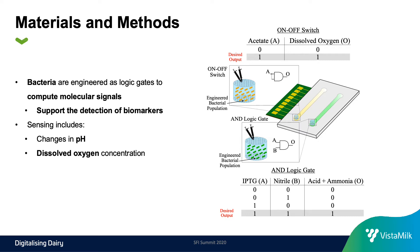The second bacterial population was engineered to behave as an ON-OFF switch by receiving acetate as input and outputting a variation in dissolved oxygen concentration. In this case, the bacterial population will consume the dissolved oxygen only if the acetate concentration is above a certain level.